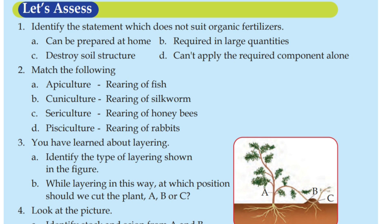Now, match the following correctly. Apiculture — rearing of fish. Cuniculture — rearing of silkworm. Sericulture — rearing of honeybee. Pisciculture — rearing of rabbit.